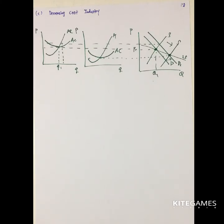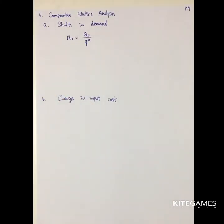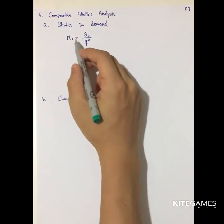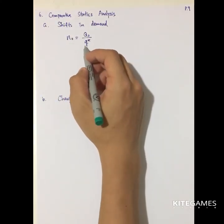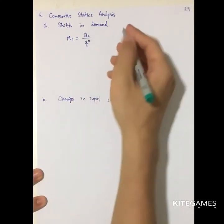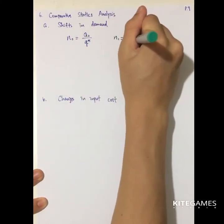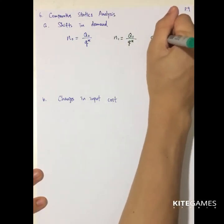Next, we will look at comparative statics analysis — specifically, what happens to the number of firms when there is a change in demand, and what changes when there is a change in input price. The number of firms equals total output divided by the output of individual firms. If demand increases from Q0 to Q1, the number of firms will equal Q1 divided by Q-star.